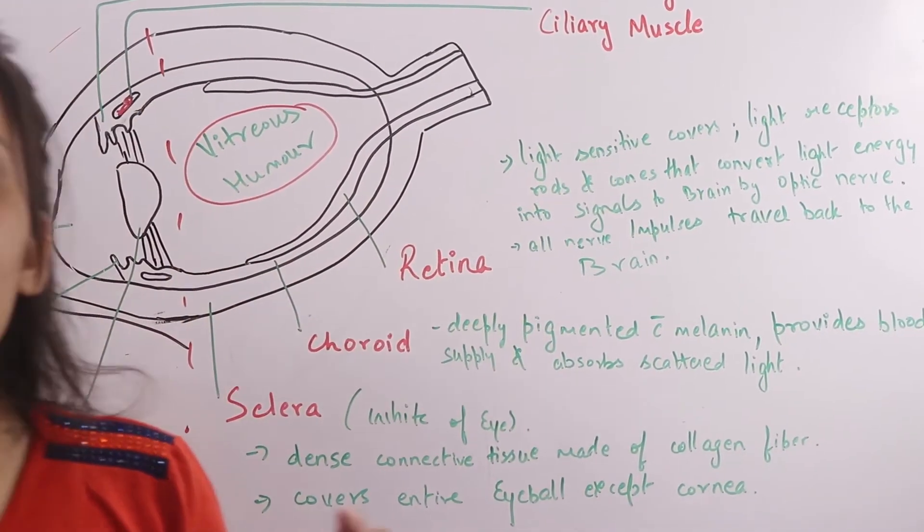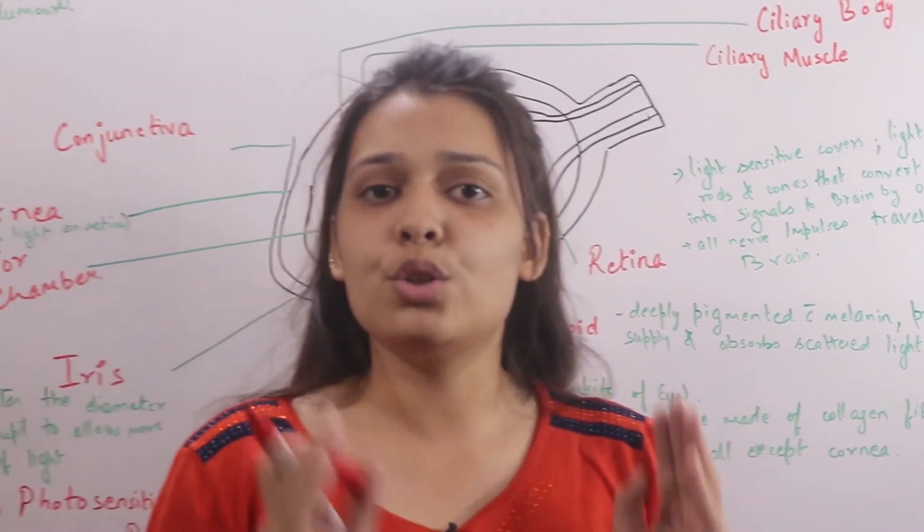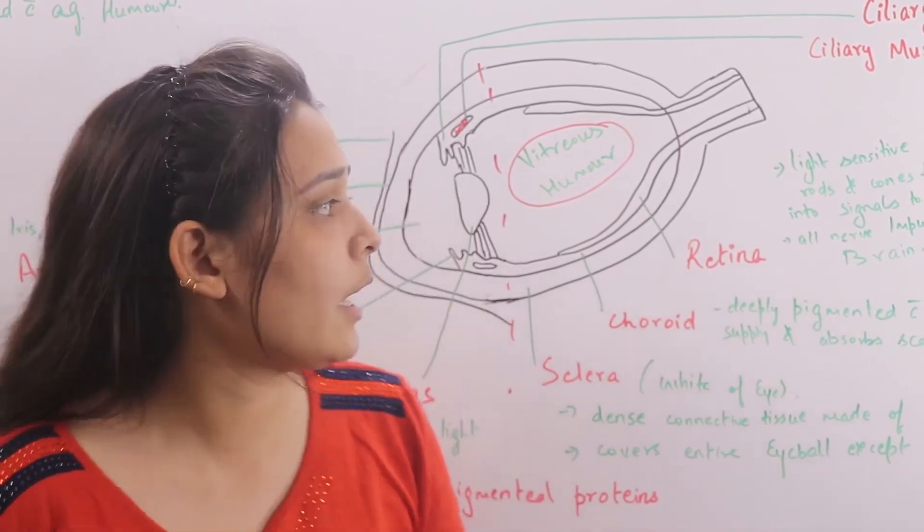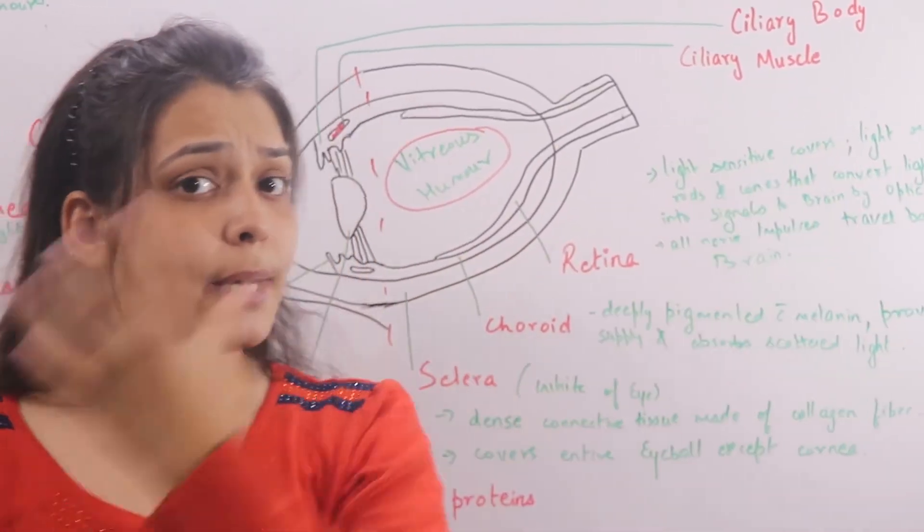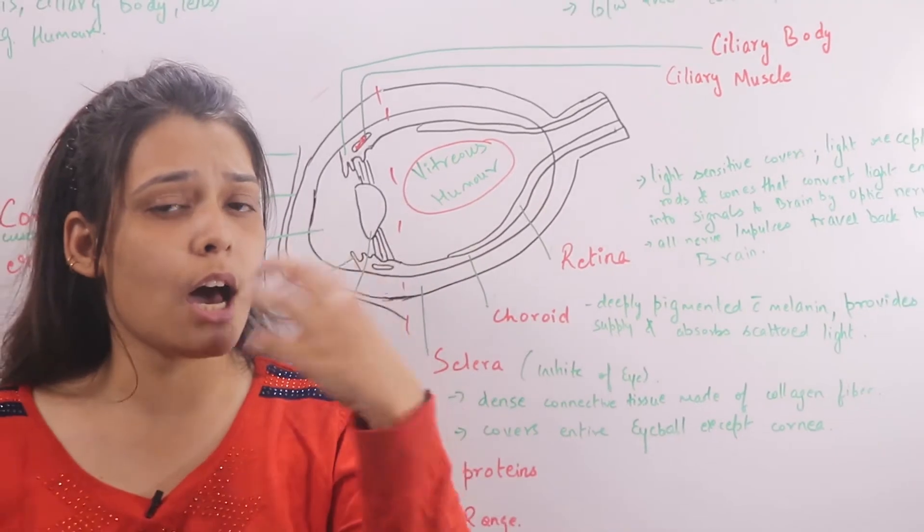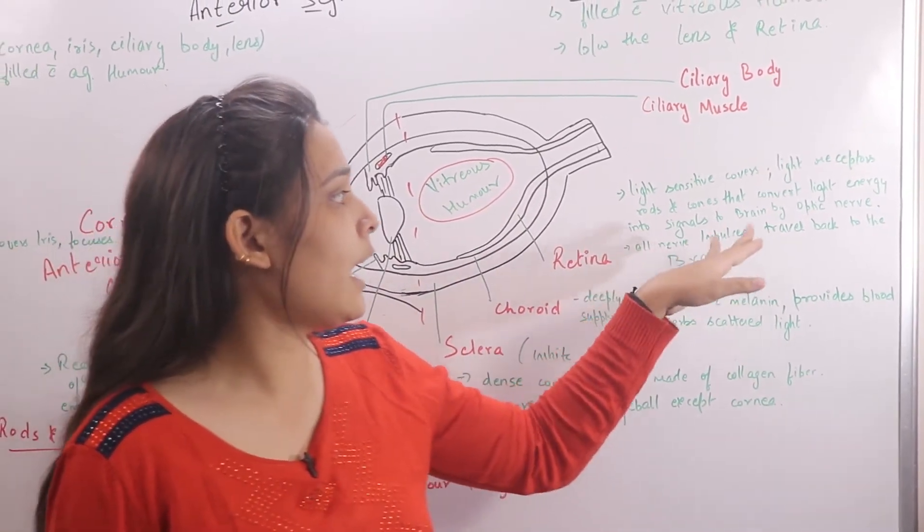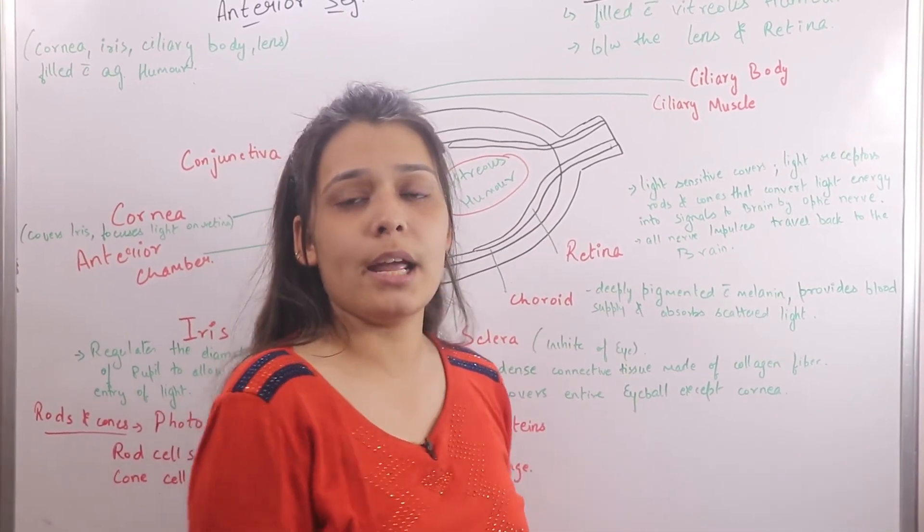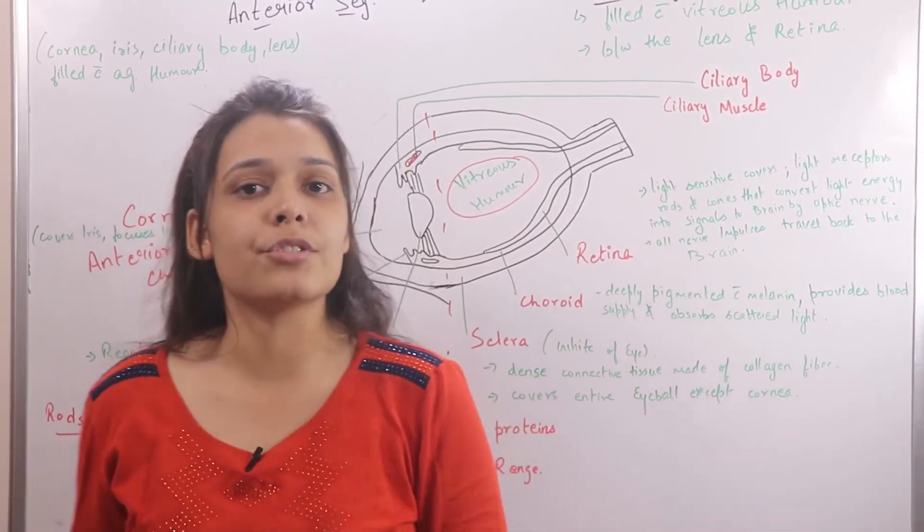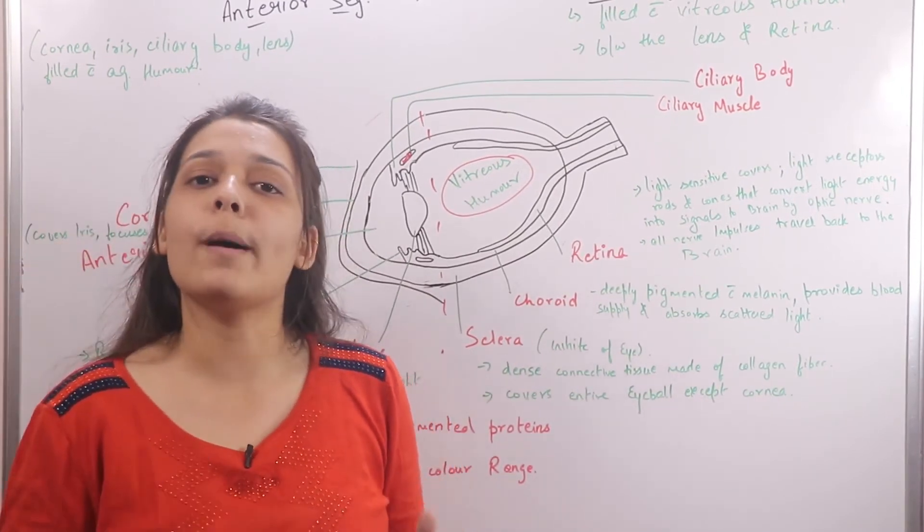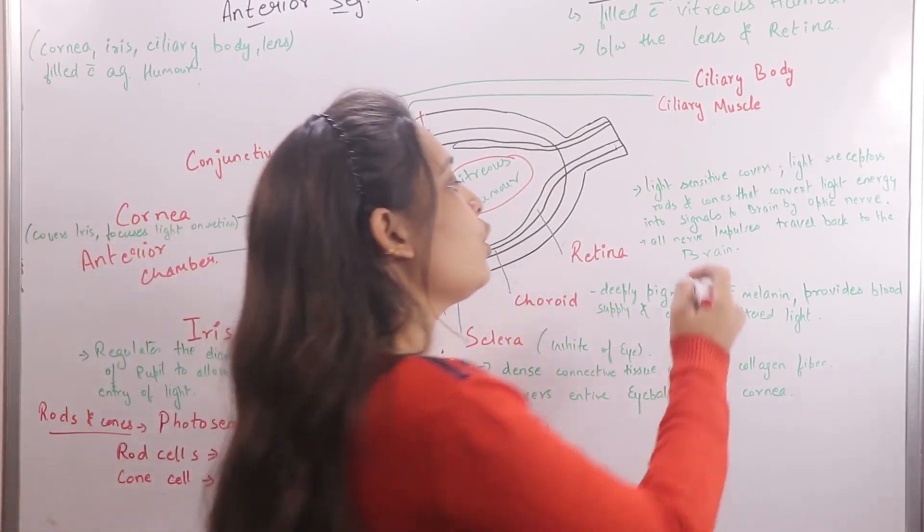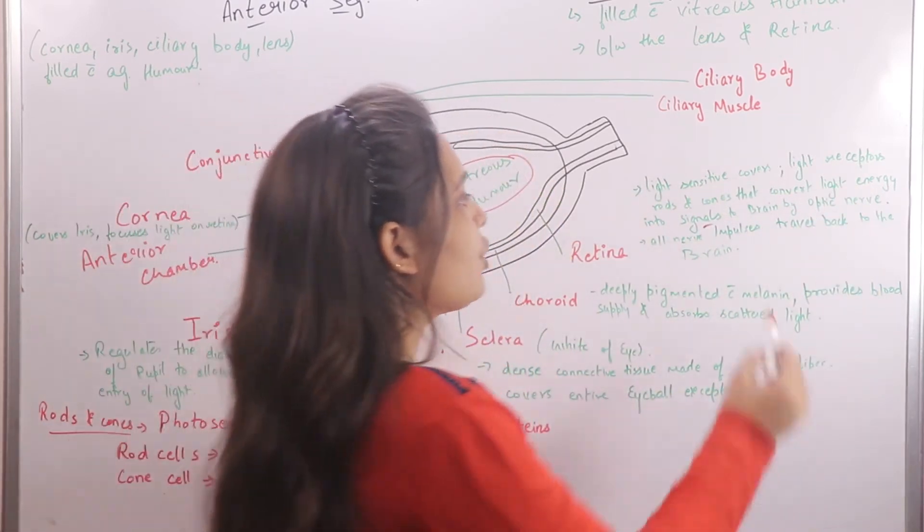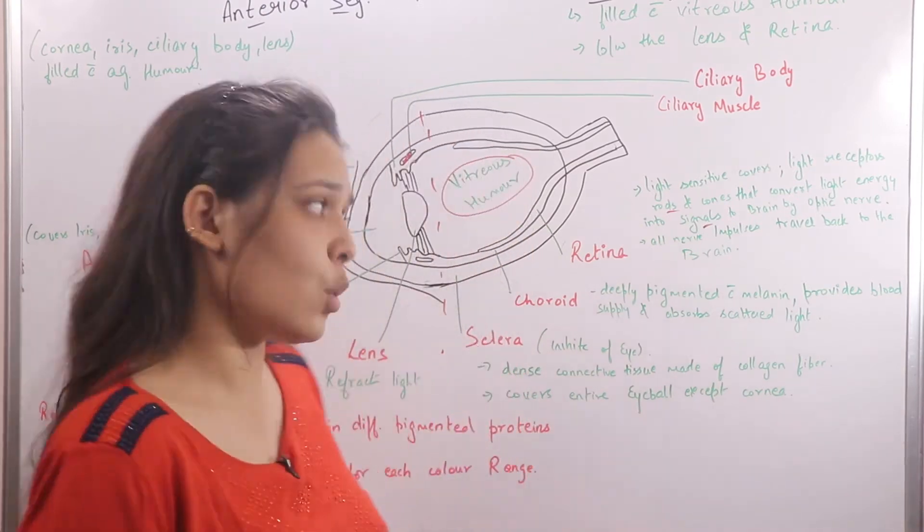Rods and cones are light receptors in the retina. They convert light energy into signals, which travel to our brain via optic nerves. So these signals that convert light energy to our brain are through rods and cones.